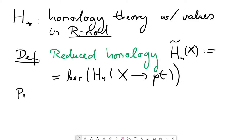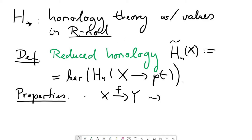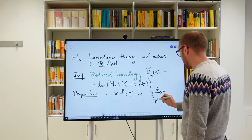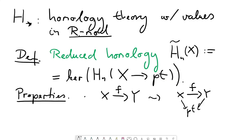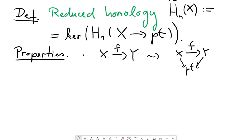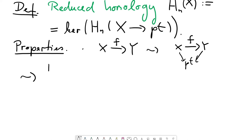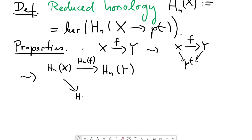Let's collect some properties. If I have a continuous map of topological spaces, then I always get a commutative diagram of spaces if I extend this map to the one-point space. Applying the H_n functor to this diagram, I obtain the homology group of X, the induced homomorphism H_n of f, H_n of Y, and the homology of the point.